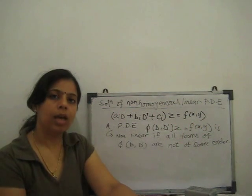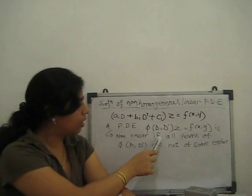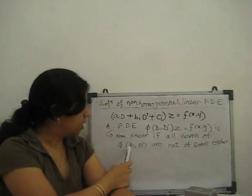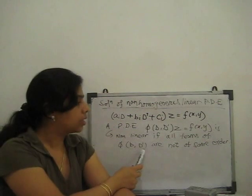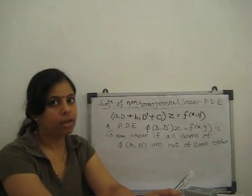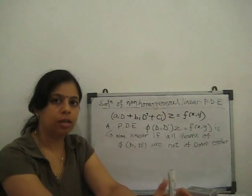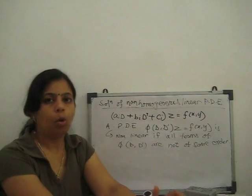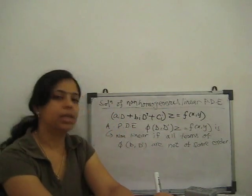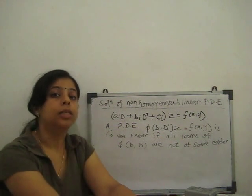The right-hand side only has a function of x and y. It is called non-linear if all terms of phi(D, D') are not in the same order. In homogeneous, all terms have the same order. But in non-homogeneous, that is not necessary — not all terms need to have the same order.